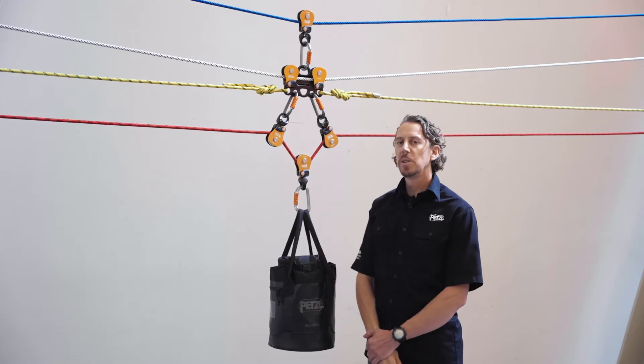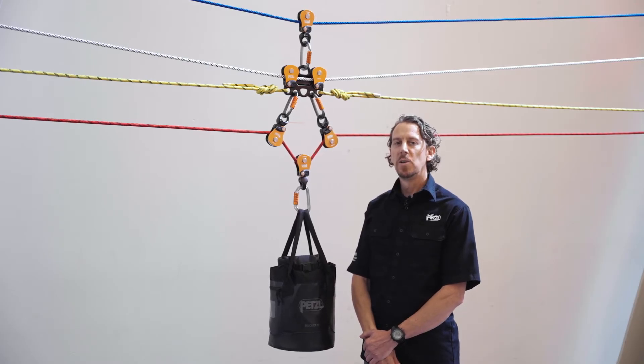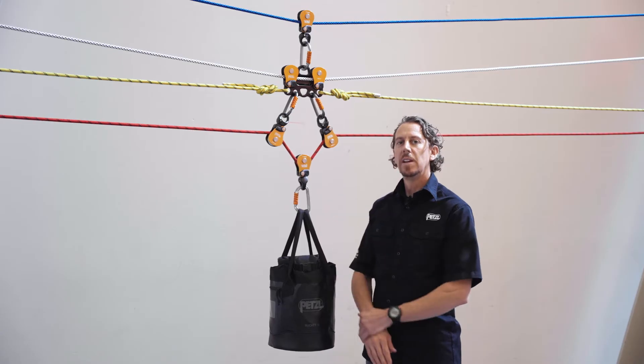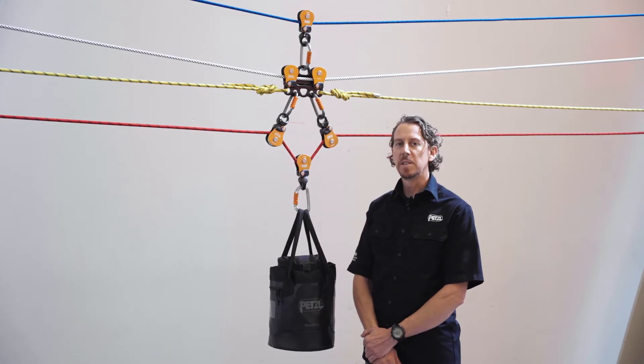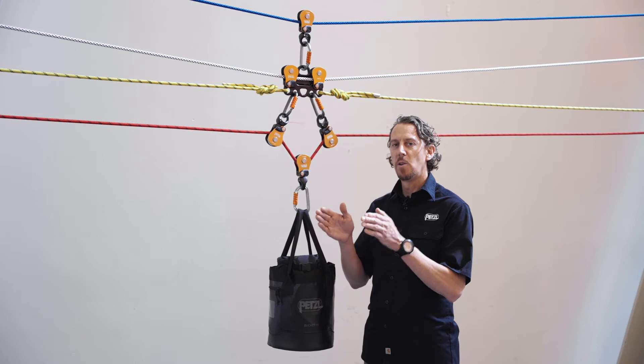Now we're going to take a look at the Reeve being used in three different configurations. First, we're going to look at it used on two tension track lines with a vertical offset. Then we'll take a look at this same system in a sloped application. And lastly, we're going to take a look at it used with two tension track lines on a horizontal offset.